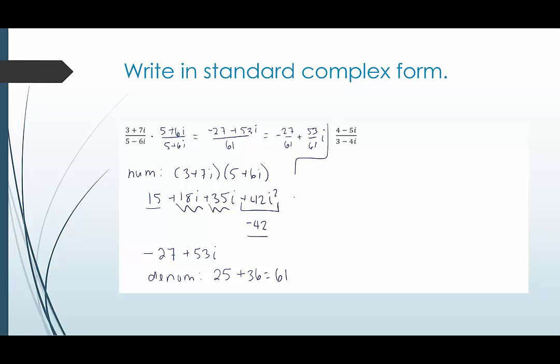Okay and in our last example here we're going to multiply by the complex conjugate of the denominator. That's going to be 3 plus 4i to the numerator and 3 plus 4i in the denominator. The numerator we get 4 minus 5i times 3 plus 4i. So that would be 12 plus 16i minus 15i minus 20i squared.